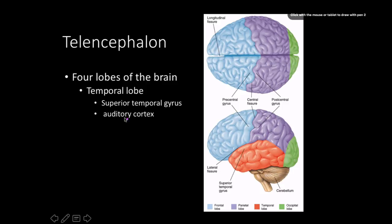The temporal lobe has additional functions beyond the auditory cortex, though those are still somewhat speculative — published in research papers but not yet standard in textbooks. For now, the key thing to know is that the temporal lobe contains the auditory cortex.